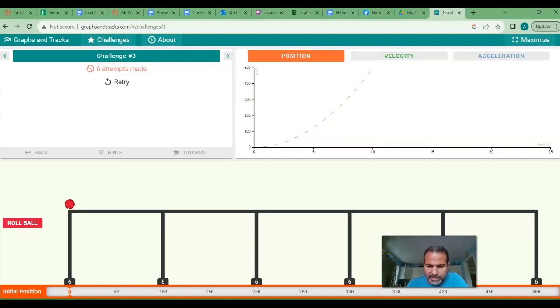I'll drag this over to, I don't know, 20. Now let's roll the ball. As you can see, I get a linear graph of position versus time because I gave it a constant velocity and it's not getting faster or slower.